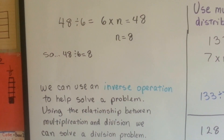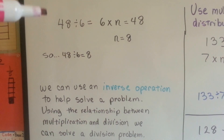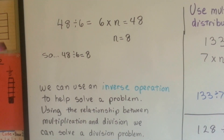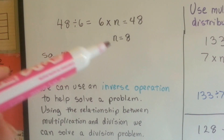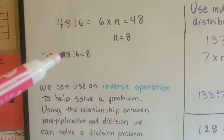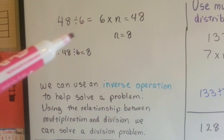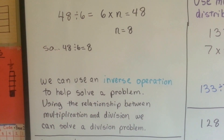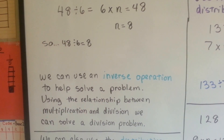In 48 divided by 6, we can say 6 times n is 48. If n is 8, we know that 48 divided by 6 is 8. See, we use the inverse. So we can use an inverse operation to help solve a problem.